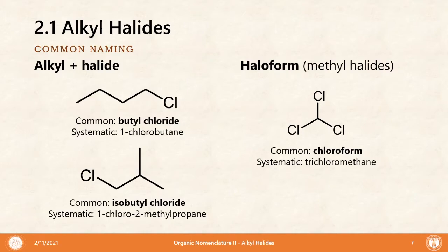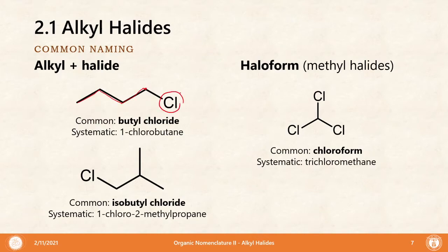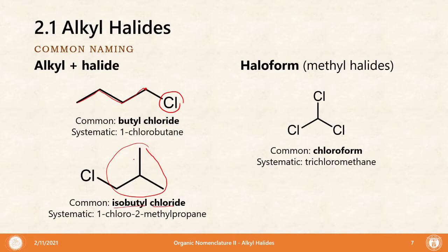Alkyl halides can also be named with common names, typically formed using the term alkyl plus halide. These are usually only used for simple alkyl halides. For example, 1-chlorobutane can be named as butyl chloride. Isobutyl chloride — remember, isobutyl is an acceptable complex substituent name. But if we were to name it systematically, we'd use 1-chloro-2-methylpropane.